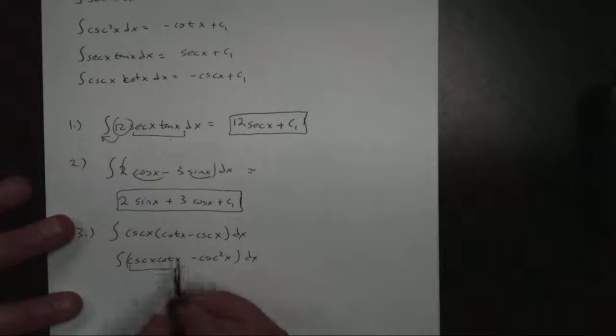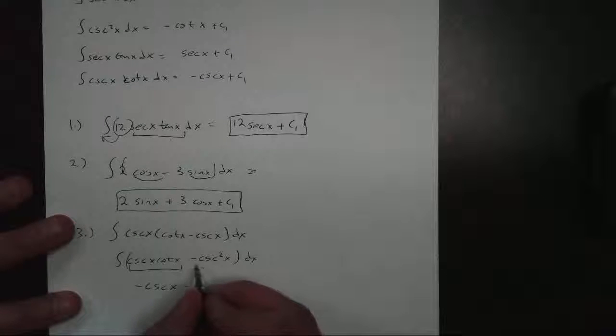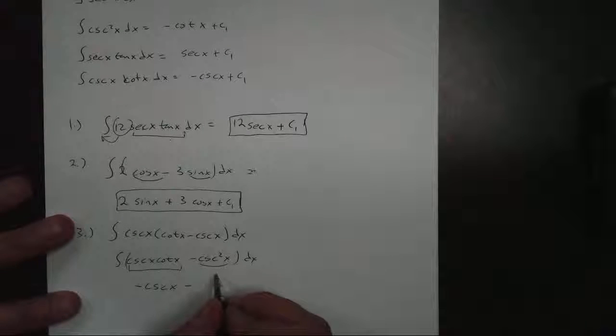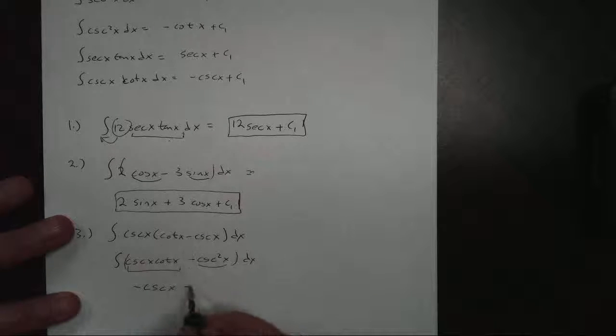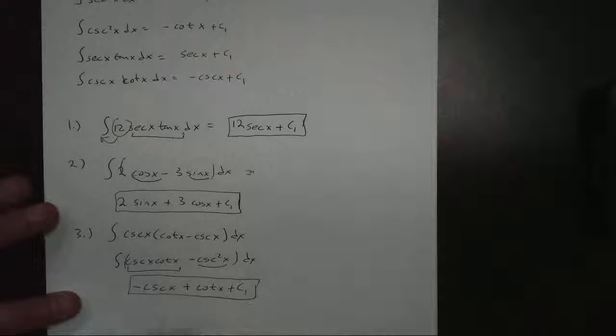What function's antiderivative is cosecant cotangent? That's our negative cosecant of x. What function's derivative is cosecant squared? That's our, and look up here, negative cotangent, so it becomes positive cotangent of x plus c1. And there we go.